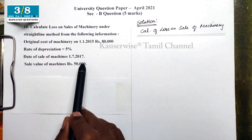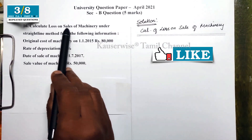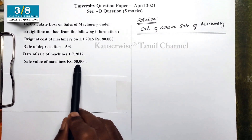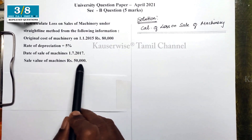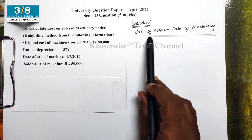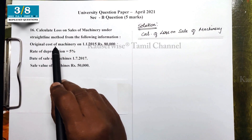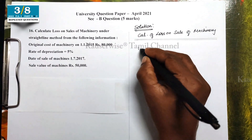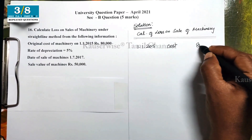With this information, they are asking us to find out the loss on sale of machinery. We need to determine if there is a profit or a loss on sale. The solution: Calculation of loss on sale of machinery. First, on 1st January 2015, the original value of machinery is 80,000.